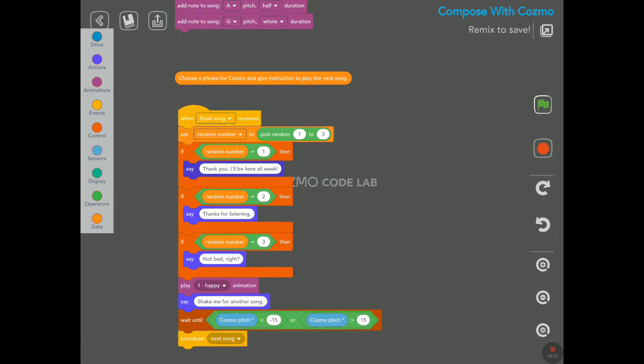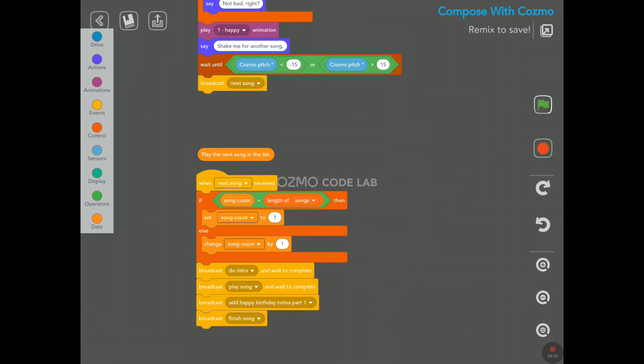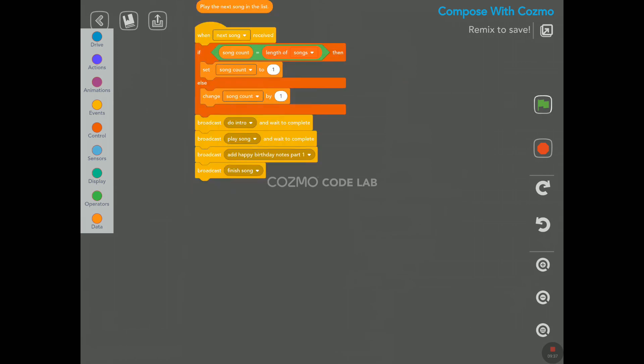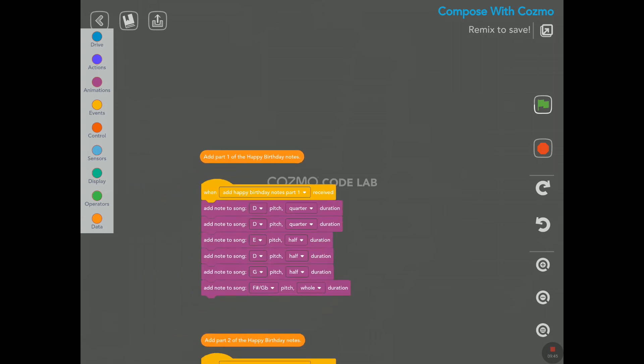Choose the phrase for Cosmo and give instructions to play the next song. Yeah, he says, again, random. But then he says at the end, shake me for another song. And he played the happy animation. Play the next song in the list. And this is it. There's nothing else here. I just want to go back. I just want to look at this one here.